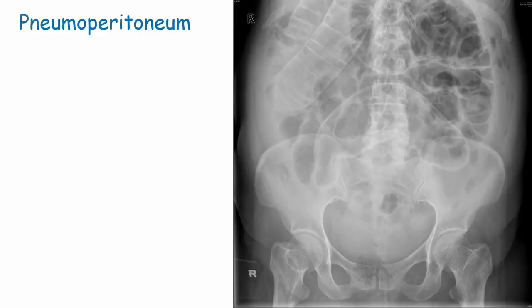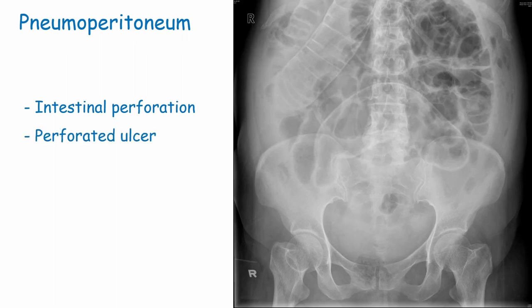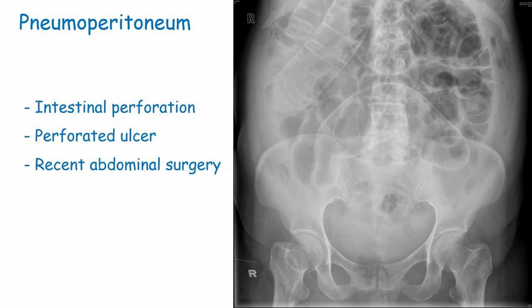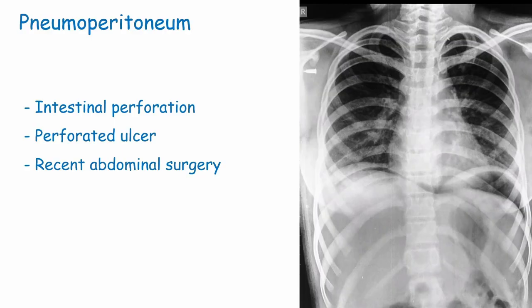Pneumoperitoneum means free air in the peritoneal cavity. This is not good and can result from intestinal perforation or a perforated ulcer in the bowel. It is less worrying in the context of recent abdominal surgery, where air introduced through a peritoneal incision is generally self-limiting. On x-ray, Rigler's sign - also known as the double wall sign - indicates that both sides of the bowel wall are visible, which only occurs when there is air both inside the bowel and surrounding it. An erect chest x-ray is also useful, as air will rise to the top of the abdomen and be visible beneath the diaphragm.